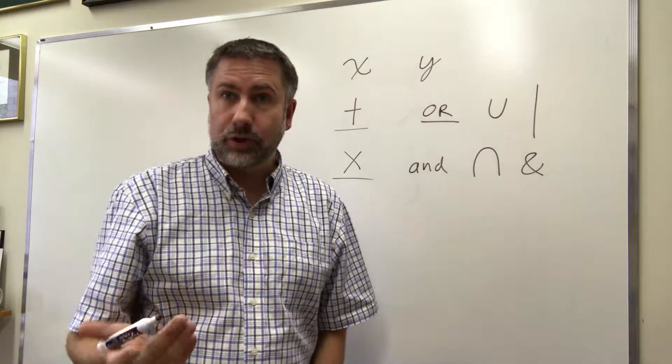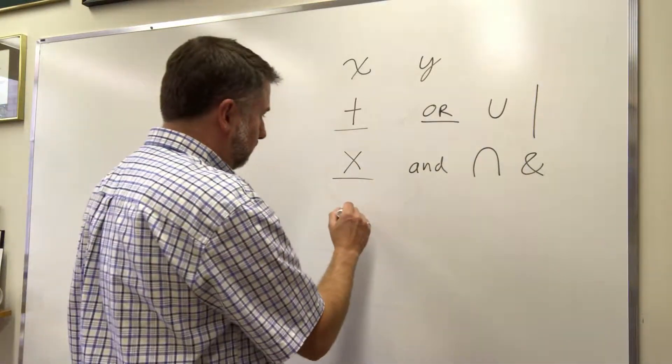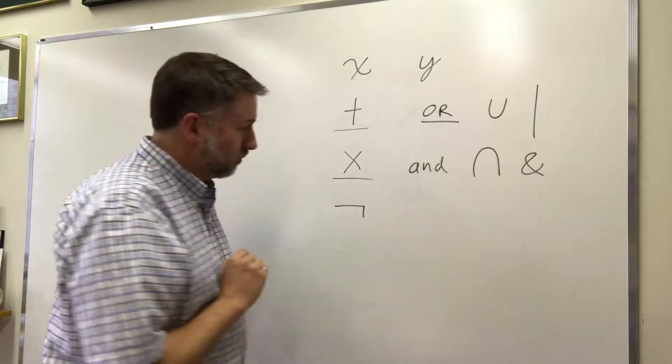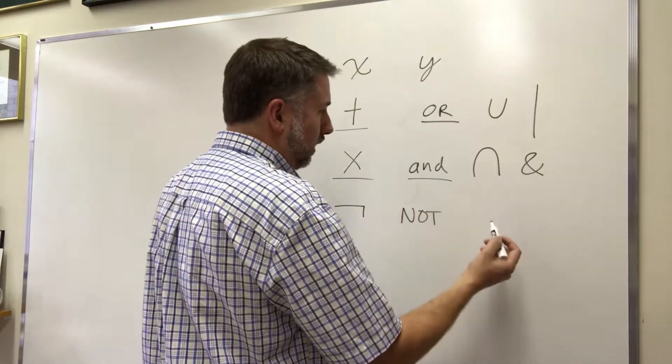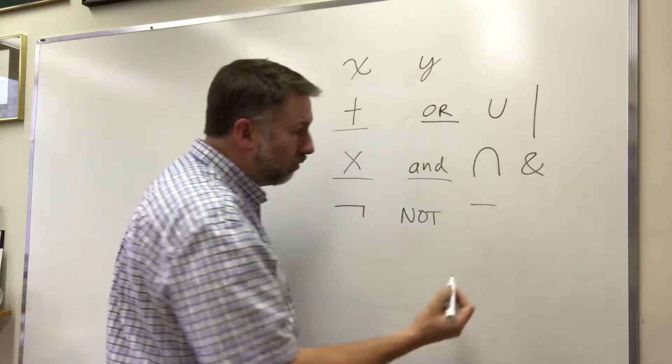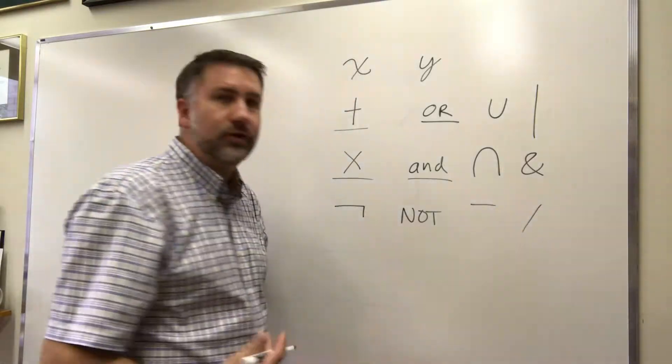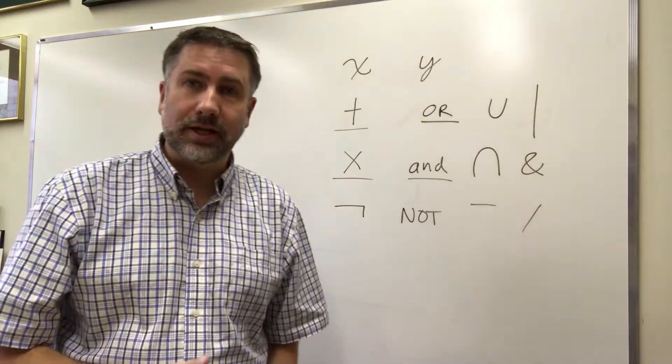And then there's a third one that we're going to use that is an inversion symbol, which we'll use this for. I would call this NOT. We can also use a bar above or we can use a slash. There's a few other different symbols that we can use to indicate these different things.